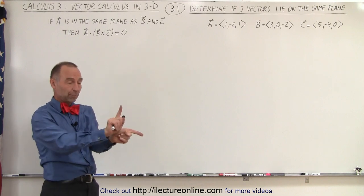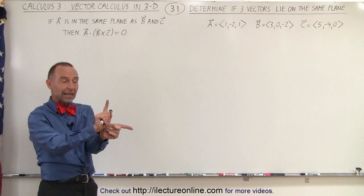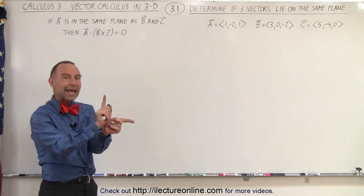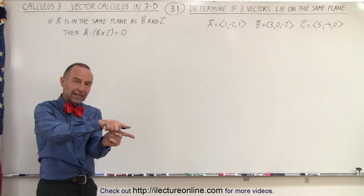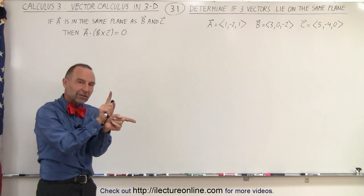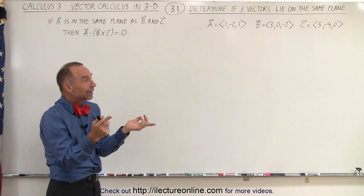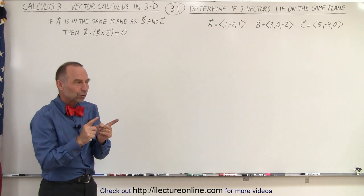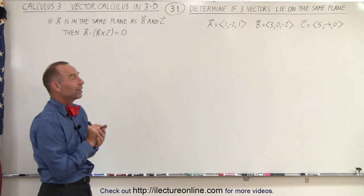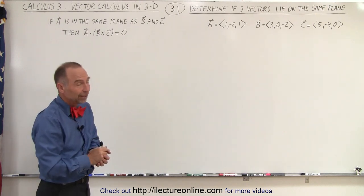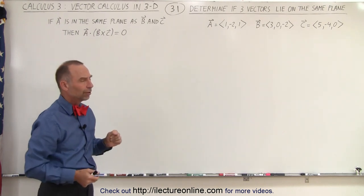So A cross B will give you a perpendicular vector C. And then if you dot that vector, the result of that, with A, and A is in the same plane as B and C, then the angle between the cross product and the third vector A is 90 degrees, and by definition the dot product is the magnitude of the two times the cosine of the angle between them. And if the angle between them is 90 degrees, the cosine of 90 is zero, then you get this to be equal to zero.